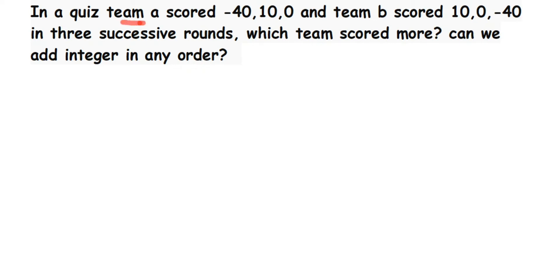Team A has scored -40, 10, 0, whereas team B has scored 10, 0, -40. You can see the numbers are the same but the order is different. They're asking which team scored more, so we have to add these integers. They're also asking can we add integers in any order, so let's find out. We'll solve for team A and team B separately.